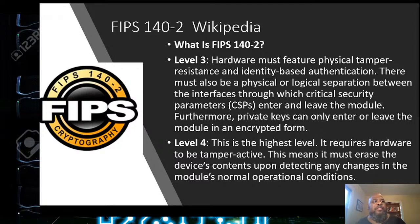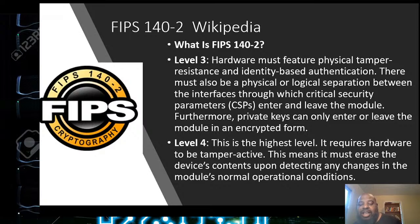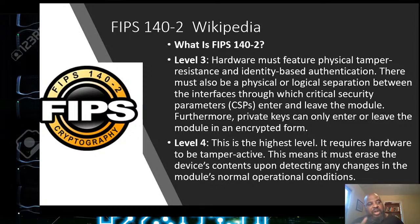Level three for FIPS 140-2 requires hardware to feature physical tamper resistance and identity-based authentication. Interfaces must be physically or logically separated through which critical security parameters pass. Level four is the highest level — it requires hardware to be tamper active, meaning it must erase device contents upon detecting any changes. Those are the four levels of FIPS 140-2.